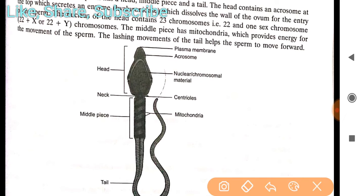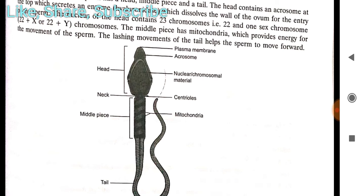The nucleus of the sperm head contains 23 chromosomes, that is 22 autosomes plus 1 sex chromosome — either 22 + X or 22 + Y. Sometimes the question is asked whether the sperm contains one or two sex chromosomes; the answer is only one — either X or Y.